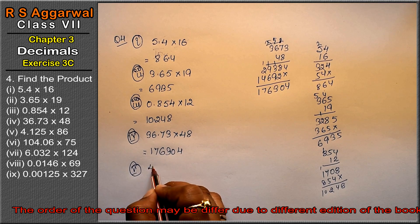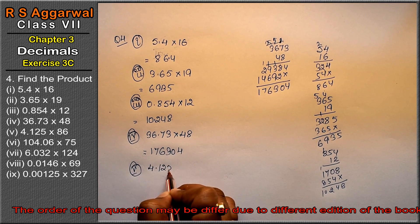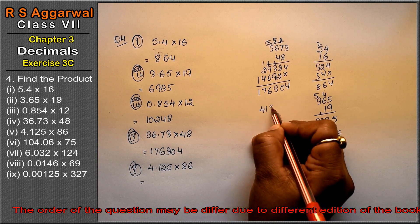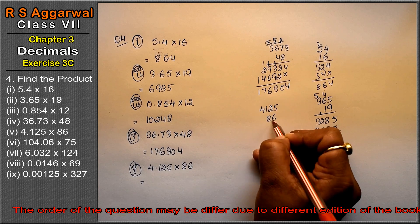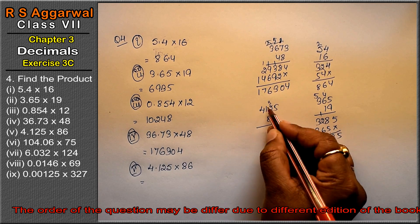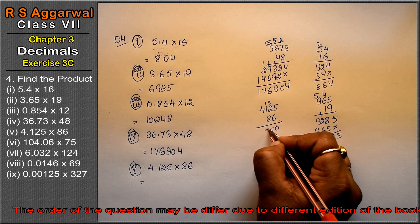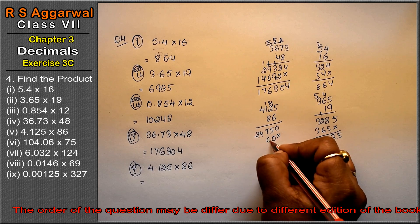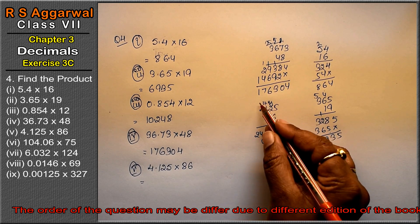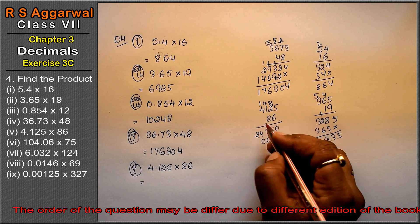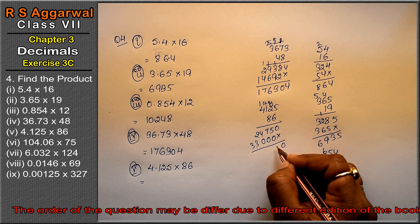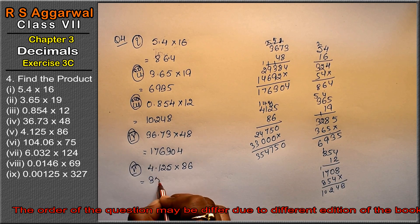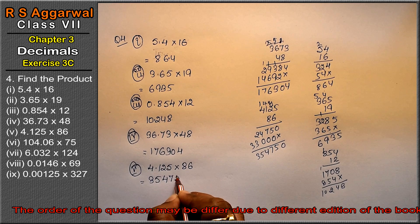Let's do the 5th part. 5th part is 4.125 into 86. So 4125 multiplied by 86. 6 × 5 is 36, then 12, 13, 14, 15. Then 6 × 7 is 24, and 8 × 5 is 44, then carrying through: 16, 20. Continuing: 8 × 1 is 8, 9, 10 carry 1, 32, 33. The result gives 354750, and placing the point 3 digits from the right gives 354.750.